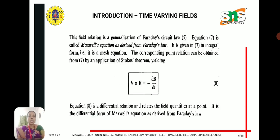Next is the differential form of Faraday's law. Applying Stokes theorem, we get del cross E equal to minus ∂B/∂t. This is the differential form of the Maxwell equation derived from Faraday's law.